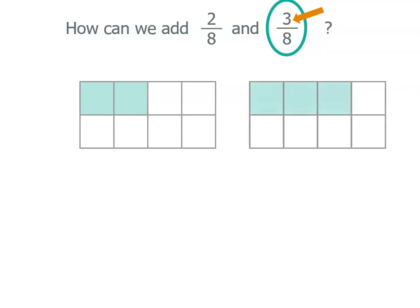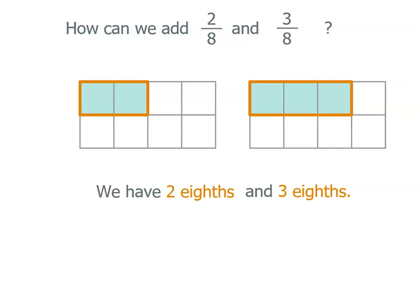So when you think about it, we've actually got 2 eighths and another 3 eighths. So there's 2 out of 8 parts there, and 3 out of 8 parts there. Now all together, we've actually got 5 eighths. And you can think of it as moving all the parts together on one whole.